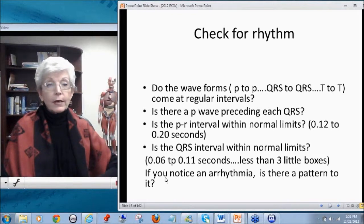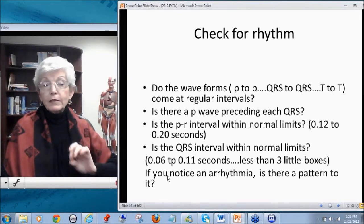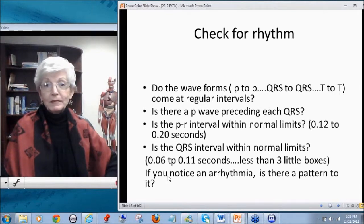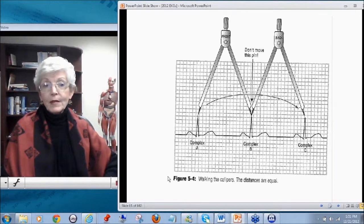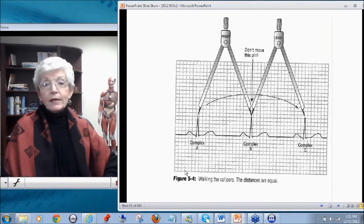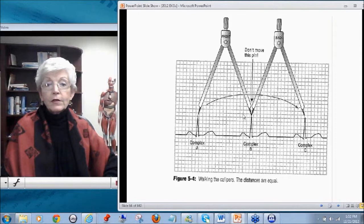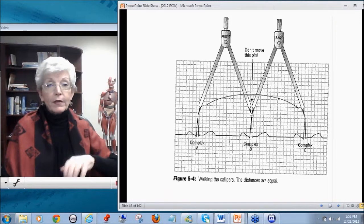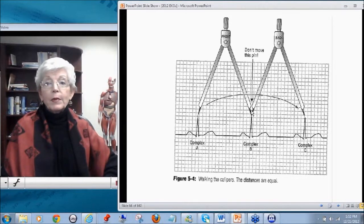And should you notice an arrhythmia or a dysrhythmia saying the same thing, is there a pattern to it? Some dysrhythmias, as we'll find out, have a rhythm to it, but there's still a dysrhythmia. So, in looking at rhythms and rates, seeing if something is regular or irregular, we set our calipers at one QRS to the next QRS. And we literally walk the calipers, or if you're adept at them, you can flip them over in your hand. I'm not very good at that. I just pick them up and move it down.